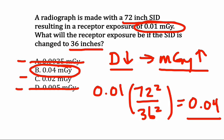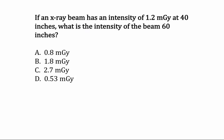So let's look at another example. In this question, if an x-ray beam has an intensity of 1.2 milligray at 40 inches, what is the intensity of the x-ray beam at 60 inches? So again, remember the fundamental idea of the inverse square law. If our distance is increasing,